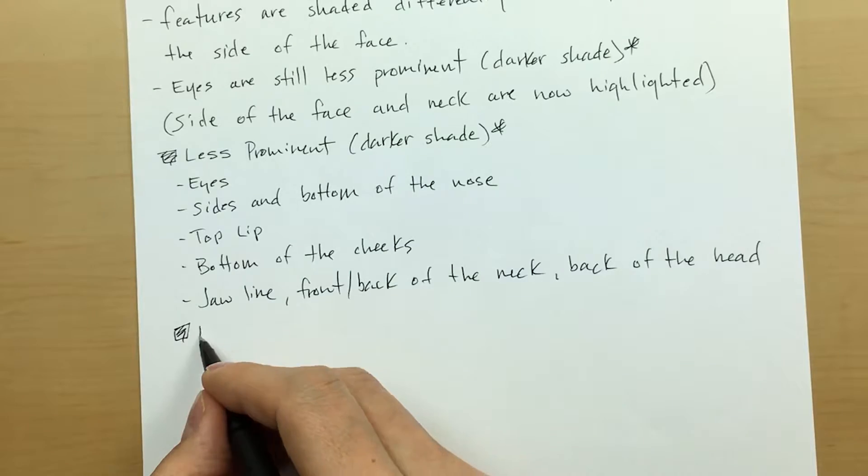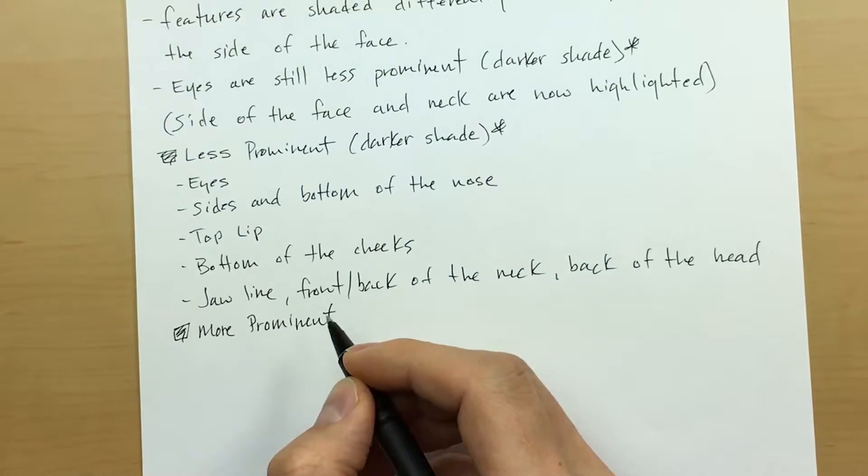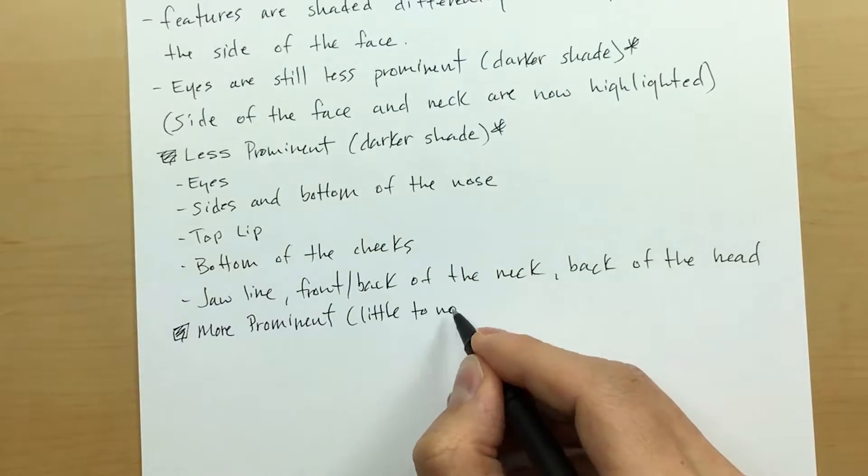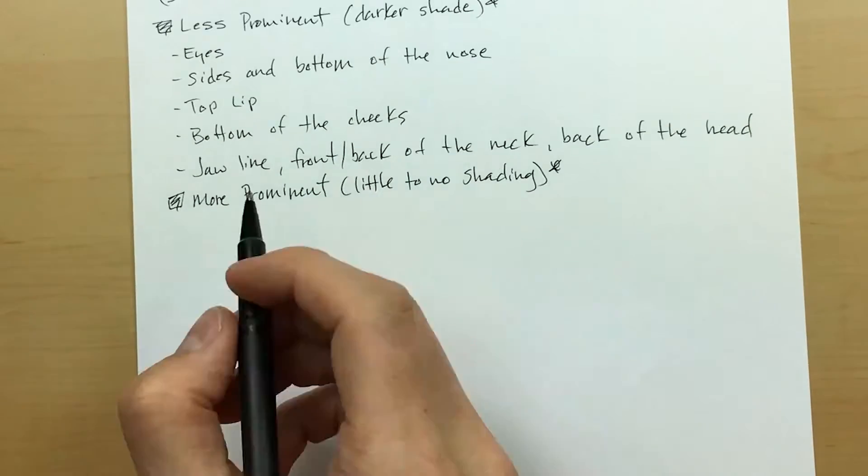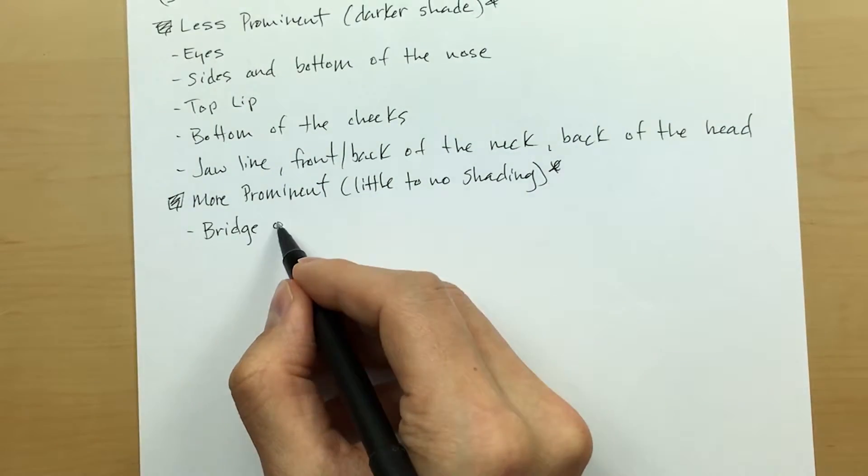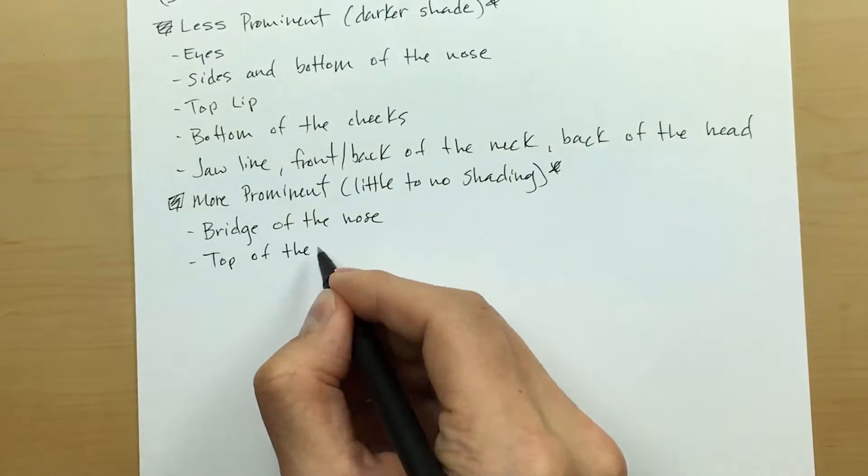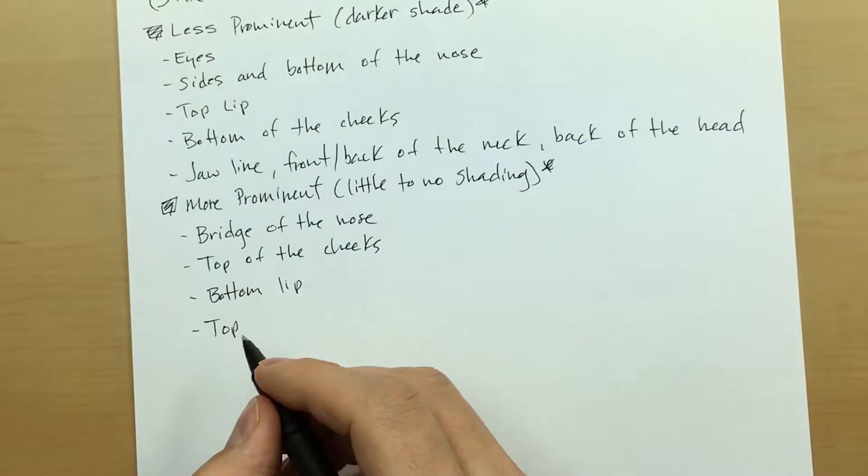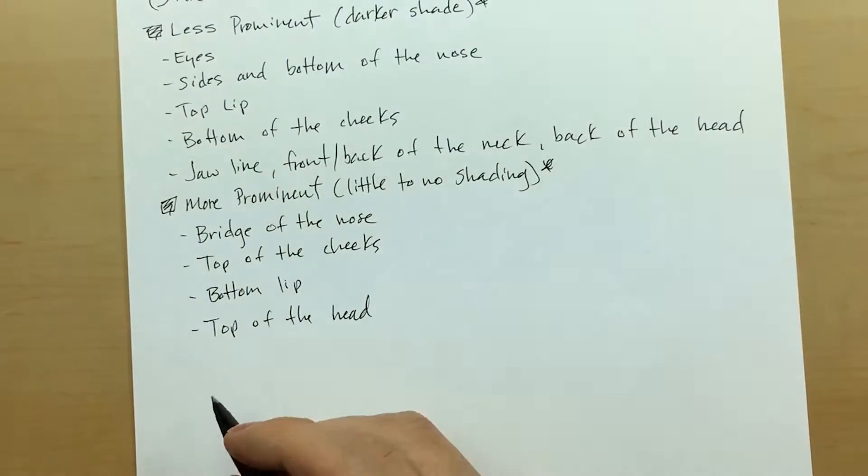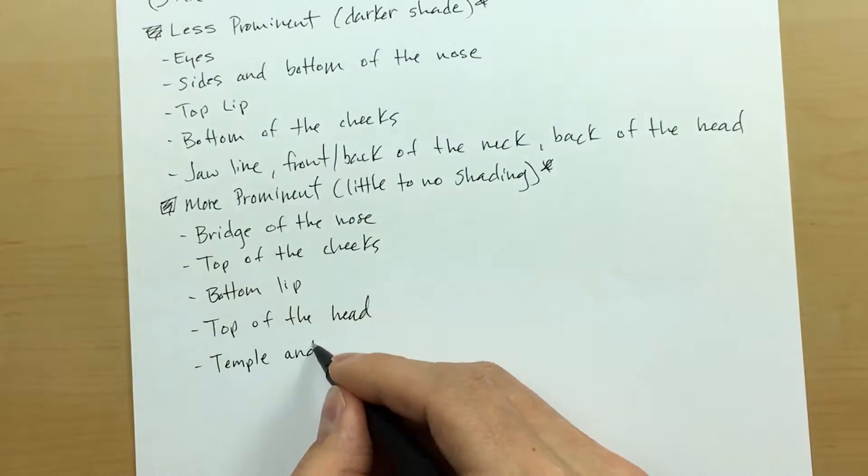And just like we had the less prominent darker shaded features, we have their corresponding opposites in this view as well. The more prominent having little to no shading. These features include, much like with the first view, the bridge of the nose, the tops of the cheeks, and the bottom of the lip. Some more prominent features that are different in this view are the temple and the ear, the top of the jawline, and the side of the neck.